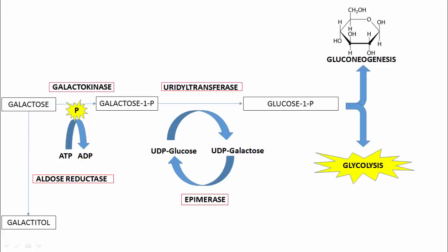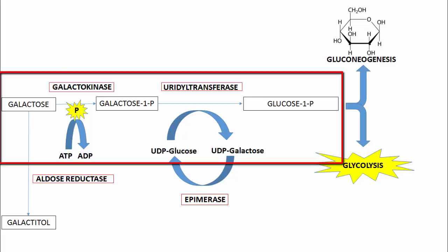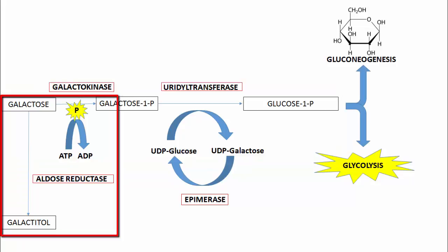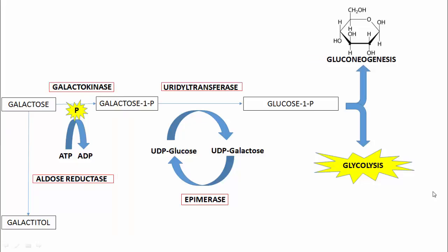Looking at the pathway itself, there are actually two pathways, as the overall scheme of galactose metabolism can run in one of two directions. The primary pathway runs from left to right on the screen, starting with galactose and ending with glucose-1-phosphate. The secondary pathway, which becomes key in some of our disorders, runs from galactose down to galactitol through the enzyme aldose reductase. For now, let's focus on the main pathway running left to right.